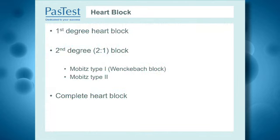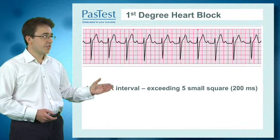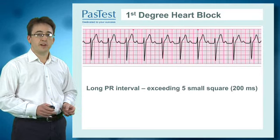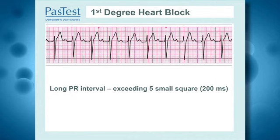Heart block can be divided into three broad categories: first degree block, second degree block, and complete heart block. On the screen here you see first degree heart block. There's a P-wave followed by a QRS complex on each beat, regular and repeating throughout the whole rhythm strip. What determines this to be first degree heart block is the time interval between the P-wave and the QRS complex — here it exceeds five small squares or 200 milliseconds. This is characteristic and defines first degree block.